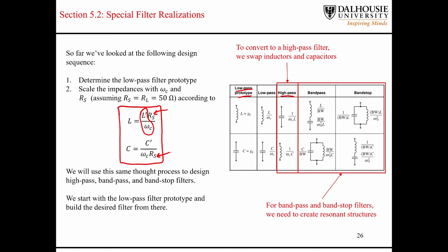For the band-pass filter, you again start with your low-pass filter prototype, determine the order, and get filter coefficients from the table. To convert the low-pass prototype into a band-pass filter with a specific cutoff frequency and bandwidth, you convert the inductors into series LC combinations, and you convert the capacitors into parallel resonant components. The inductor value in the normalized band-pass filter is the coefficient from the table divided by the bandwidth, and the capacitor value is the bandwidth divided by this product in the denominator.